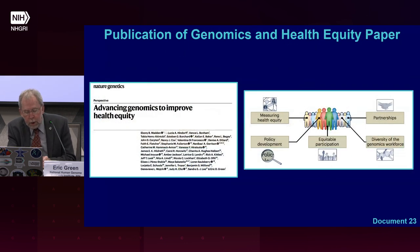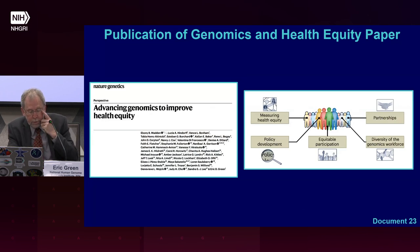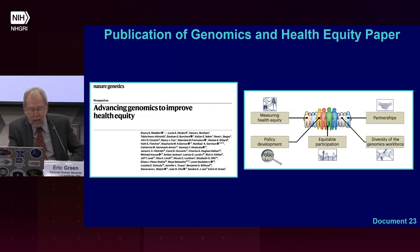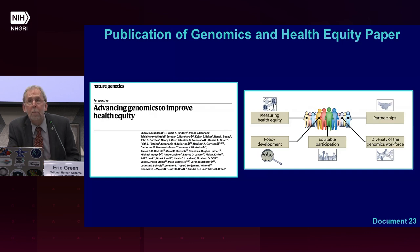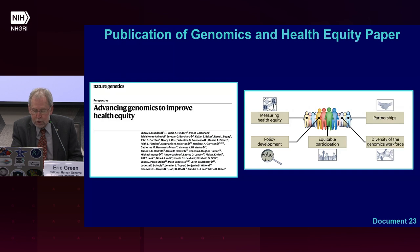In 2022, NHGRI worked with others at NIH to convene a workshop entitled Future Directions in Genomics and Health Equity, examining health equity within the context of human genomics. A paper reporting the recommendations from that workshop was recently published in Nature Genetics. The paper provides an informative literature review and discusses the importance of developing metrics to establish progress in health equity, policy development, equitable participation, establishing partnerships, and improving workforce diversity.